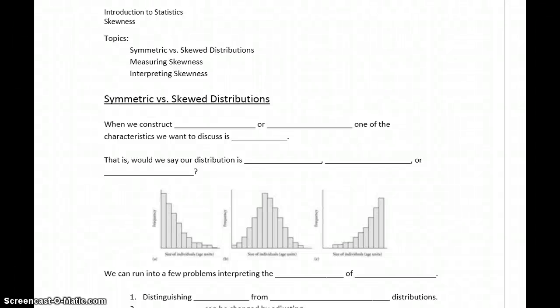In this section, we want to talk about skewness, which is a way of numerically measuring whether our distribution is symmetric or approximately symmetric, if it's left skewed, if it's right skewed, basically what's the shape of our distribution.